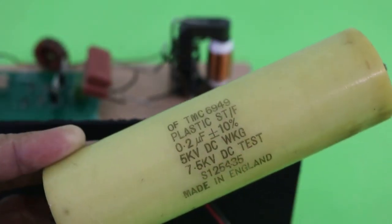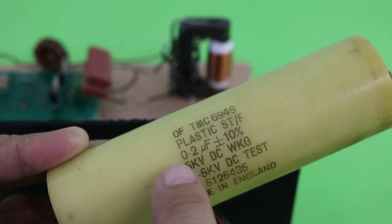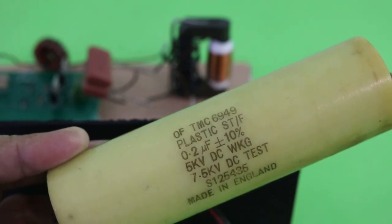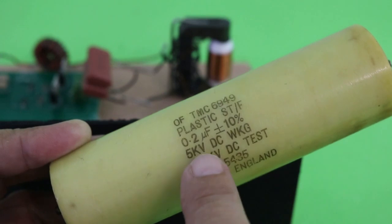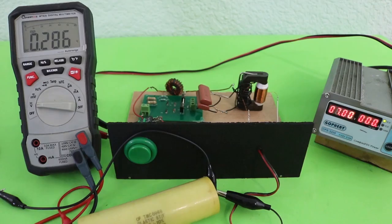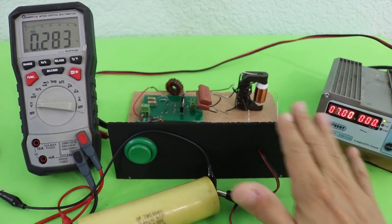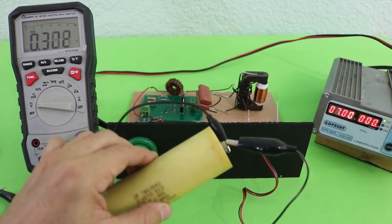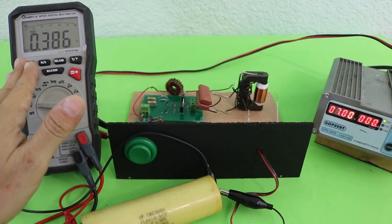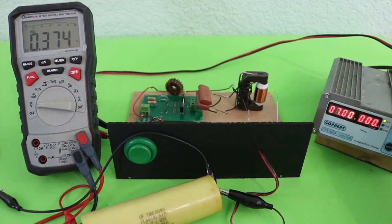Let's try first with this capacitor. It is very small, 0.2 microfarads, but it can withstand up to 5 kilovolts. I have the power supply connected to the capacitor charger. Here is our test capacitor and the multimeter to check the output voltage.